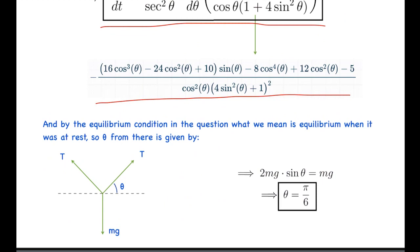By equilibrium condition in the given question, we mean equilibrium when it was at rest. θ from here is given by: 2T cos θ = mg, 2T sin θ = mg, and T = mg. So 2mg sin θ = mg, and θ comes out to be π/6.